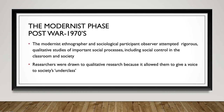In the modernist phase — the period immediately following World War Two going into the 1970s — the way that ethnography was conducted started to change. Individuals started to consider important social processes, including social control in the classroom and society. Researchers were drawn to qualitative research because it allowed them to give a voice to underserved individuals — the underclass of society. This was the very first beginning of action research, or community-based participatory research, as we might call it today.